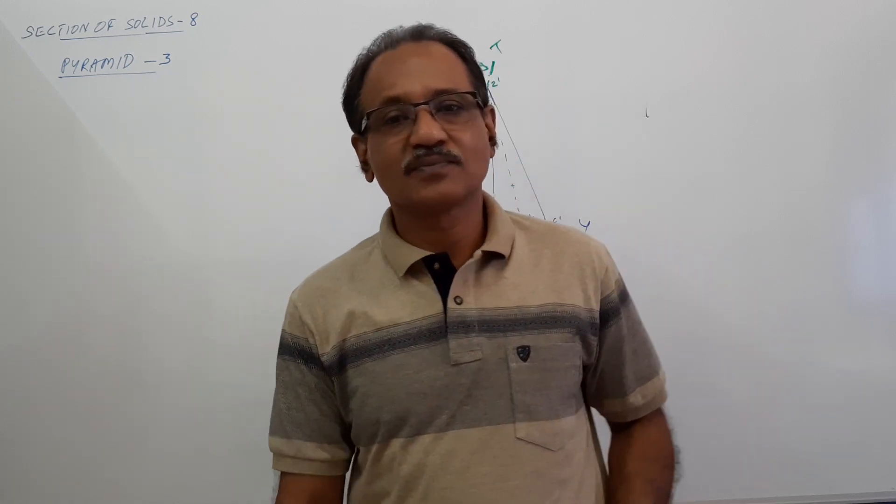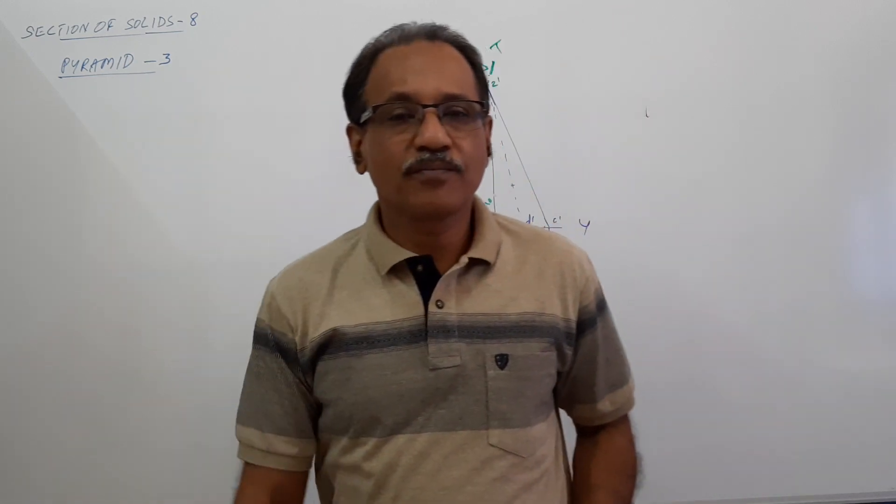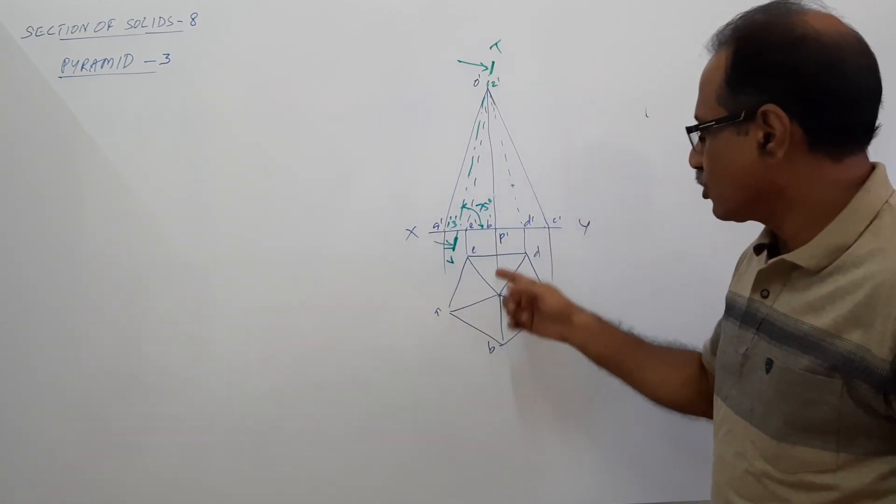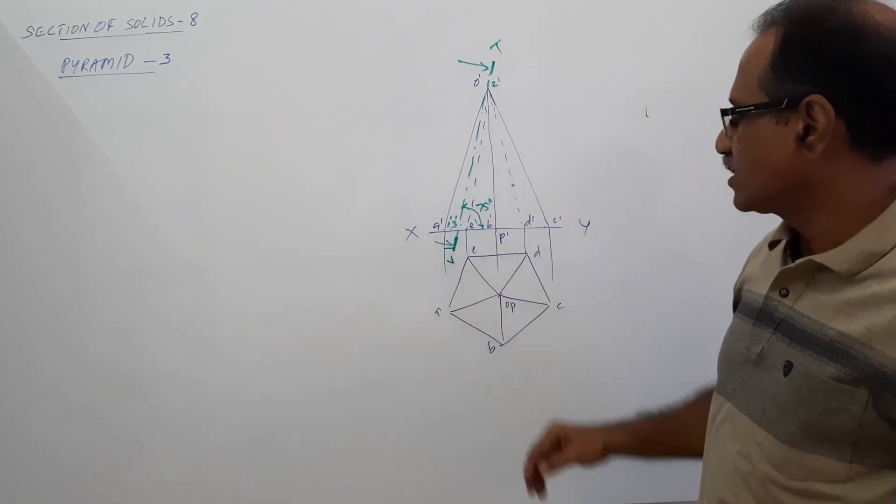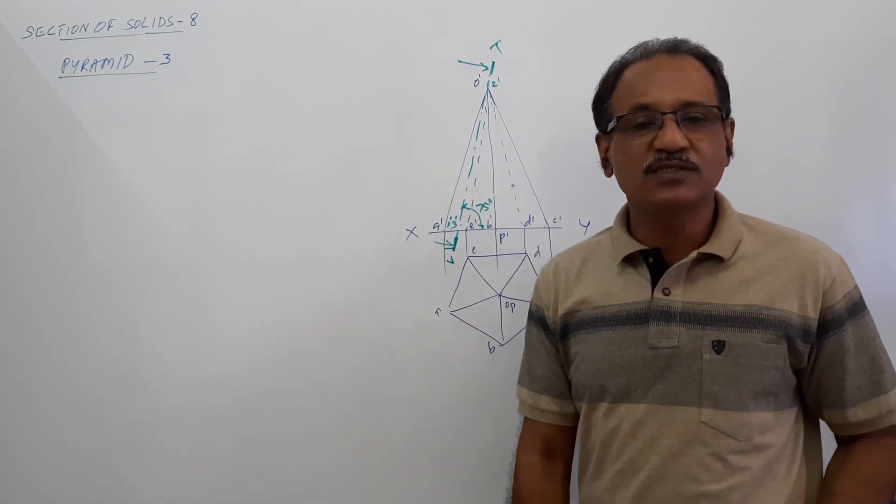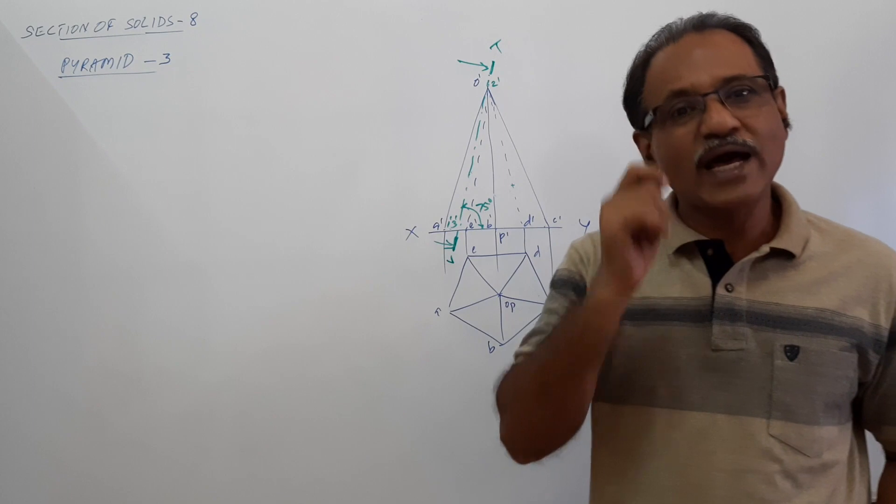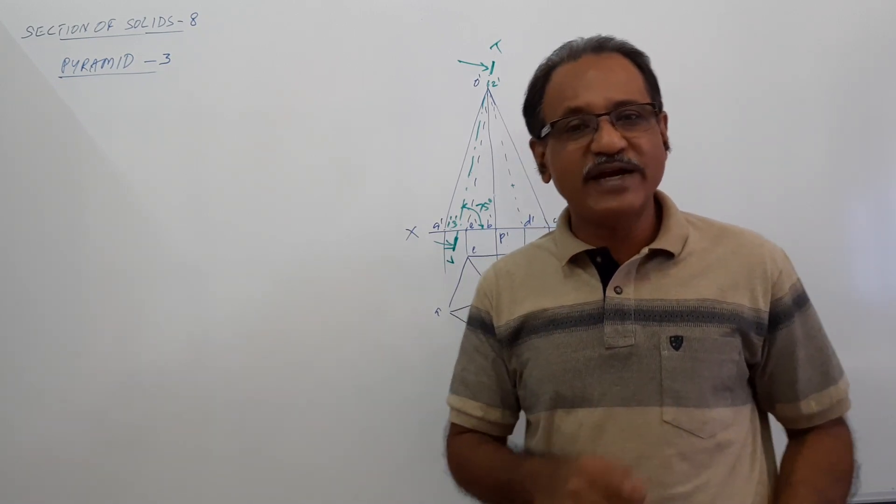Hi students, Pyramid 3, a pentagonal pyramid, 25 millimeters, 60 millimeters axis, standing on HP on its base, which is cut by a cutting plane passing through the apex and making 75 degrees to HP.